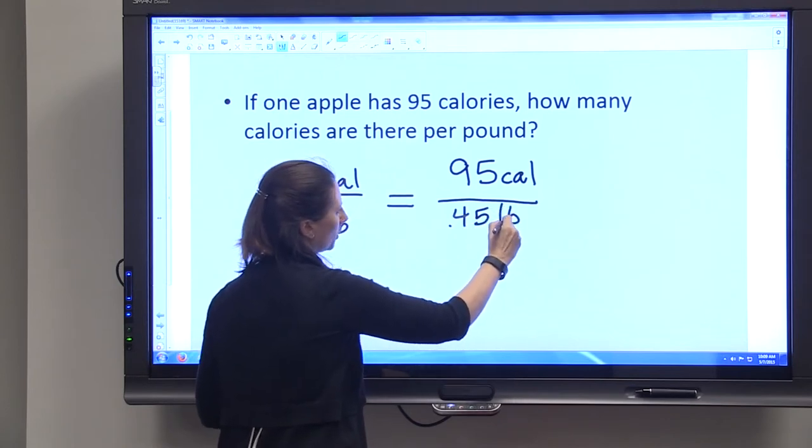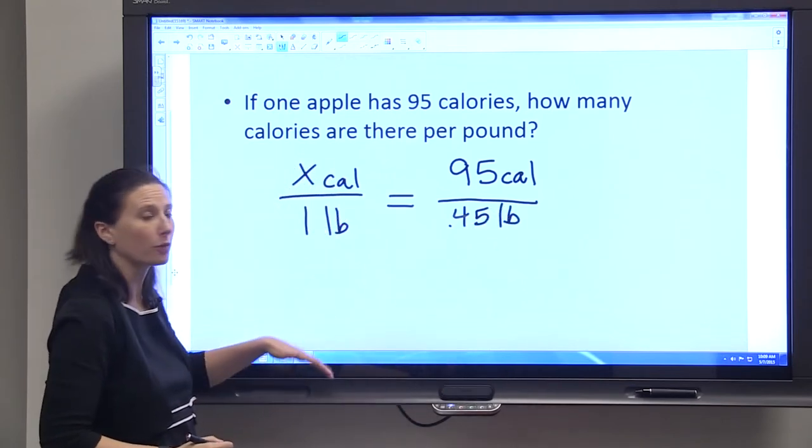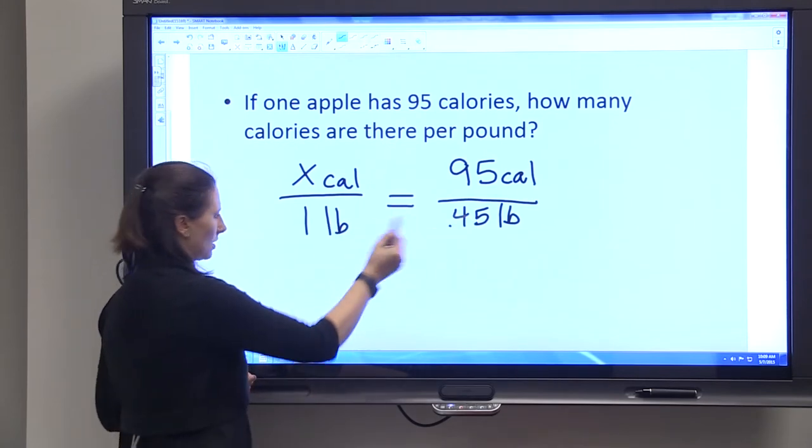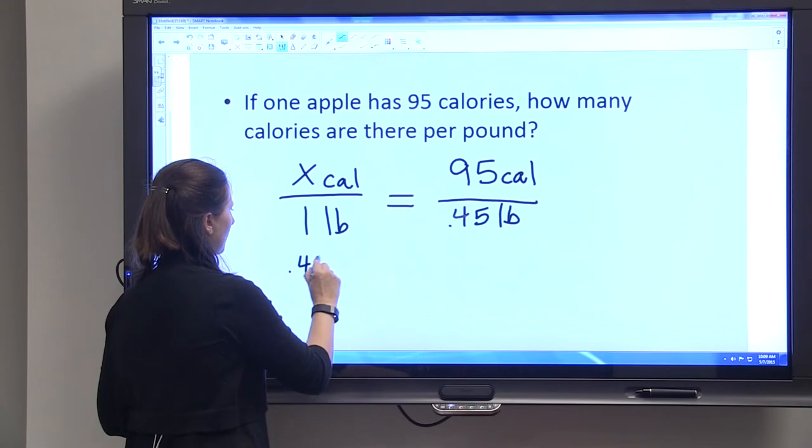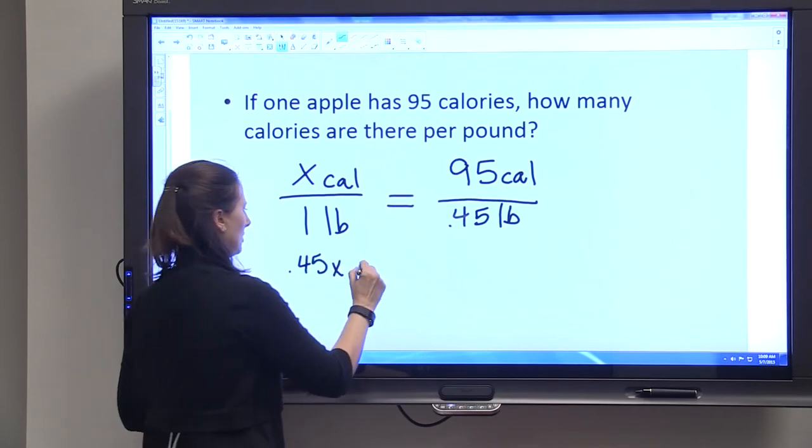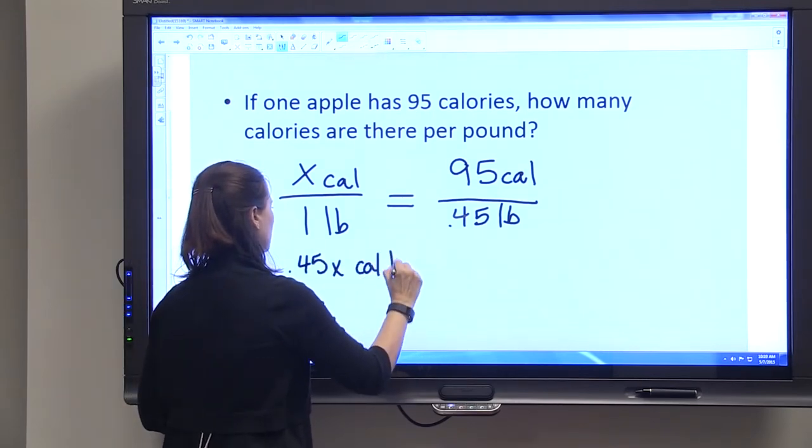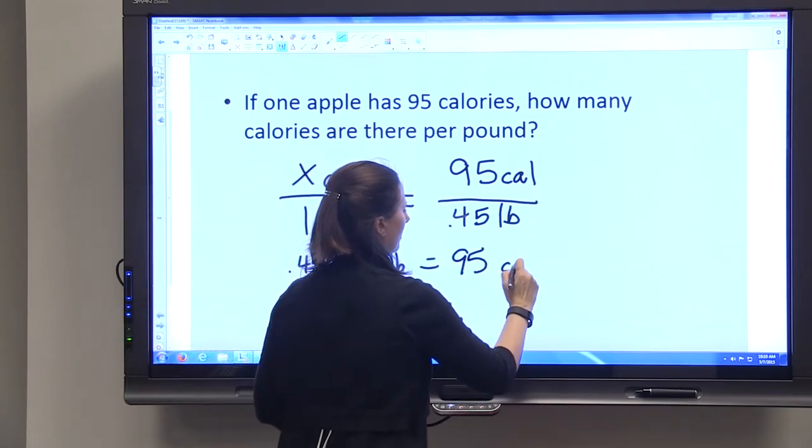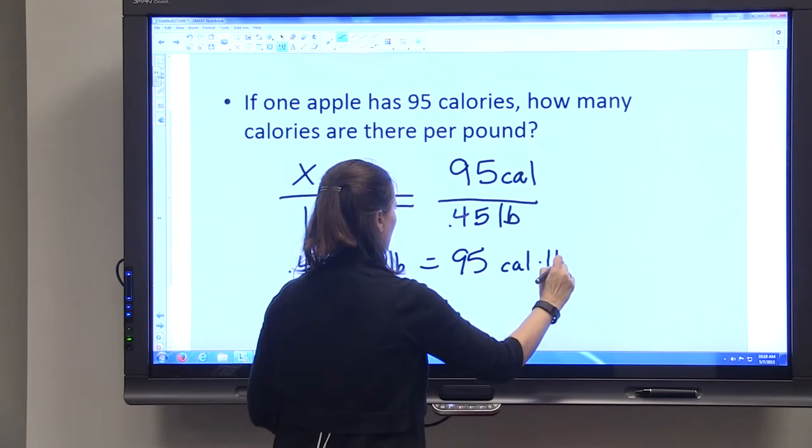We get that number because we just solved for one apple and knew that it was 0.45 pounds. So we're going to cross multiply: 0.45x calories in one pound equals 95 calories in one pound.